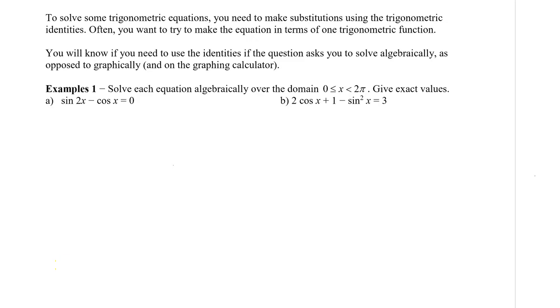So this first one here I see has a sin 2x. So whenever you see sin 2x, the first thing you should do is to change it to its trig identity, which is 2sin x times cos x minus cos x equal to 0.